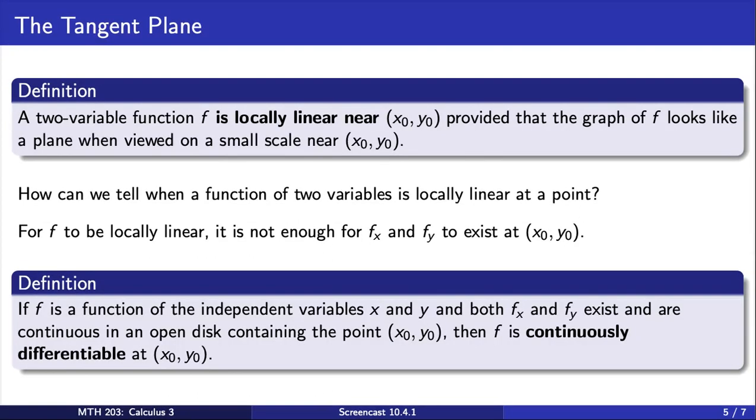We say that f is continuously differentiable at a point x0, y0 if both first-order partial derivatives exist and are continuous on an open disk containing this point. Whenever f is continuously differentiable at some point, then we know that f has a tangent plane at that point.